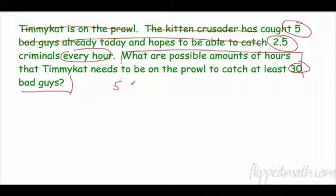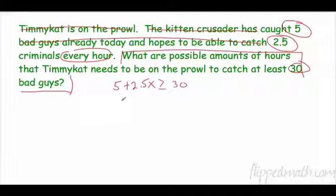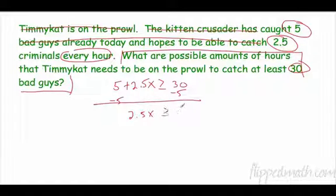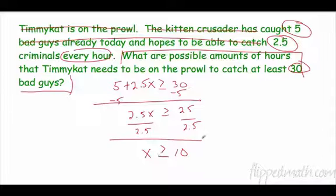He started with five — that's how many he caught already — and he's catching two and a half more every hour, so we multiply 2.5 by h (hours unknown). He needs to catch at least 30, so: 5 + 2.5x ≥ 30. Subtract 5 from both sides: 2.5x ≥ 25. Divide both sides by 2.5, and x ≥ 10. So Timmy Cat needs to work at least 10 hours or more to catch 30 criminals.